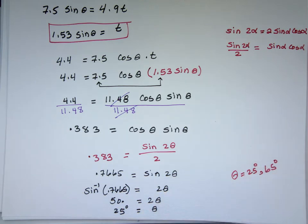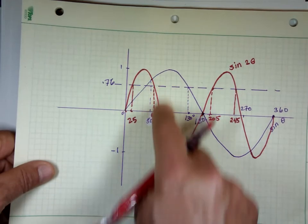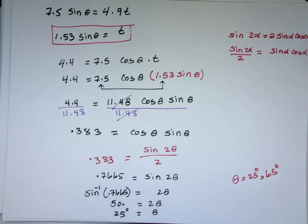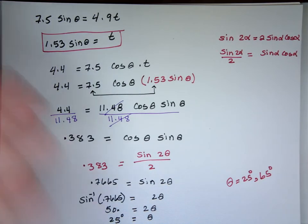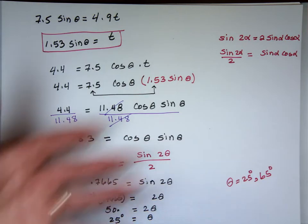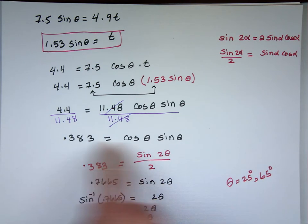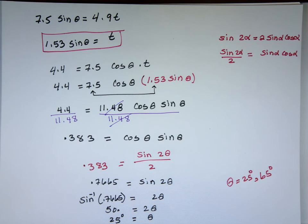That's probably the hardest math problem you'll see this semester. The book might give a shortcut formula, but to understand the physics and math behind it, you need to go through all that — including knowing the trig identity sin 2α = 2 sin α cos α. Without that identity, you can't solve it.